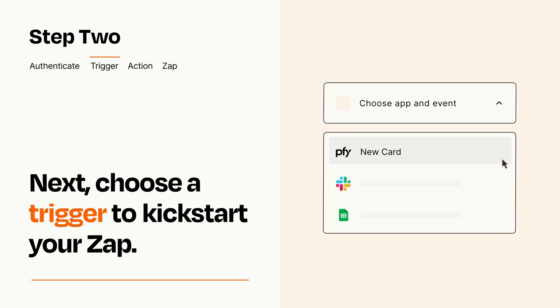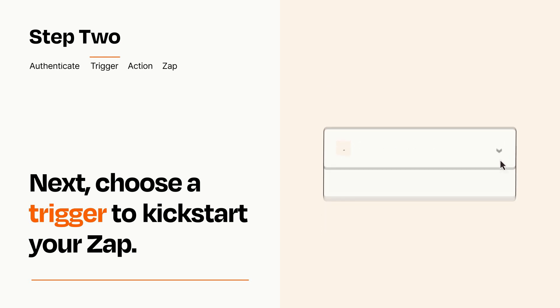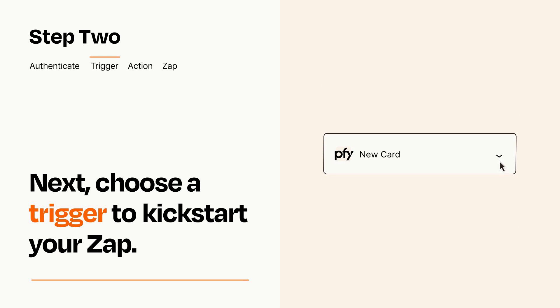Now let's set up your trigger, which is the event that starts your Zap. Pick the trigger event that you want from the list. When you set up this step, your Zap will pull in test data from your trigger app that you'll see later when setting up your action app.